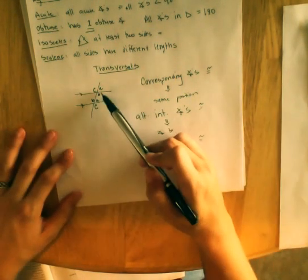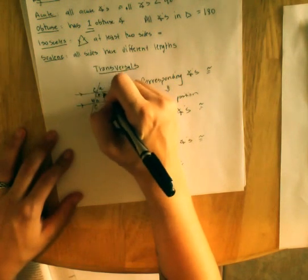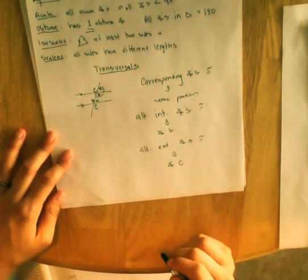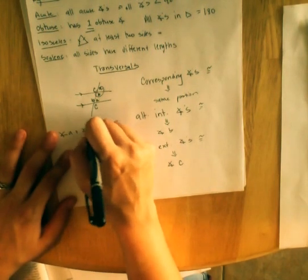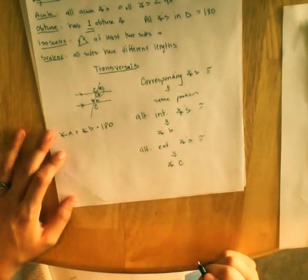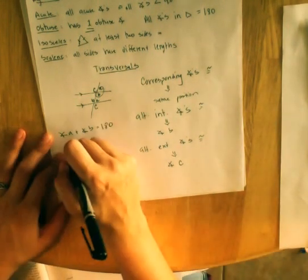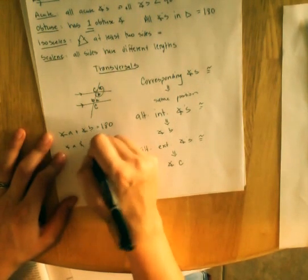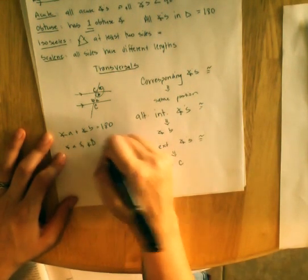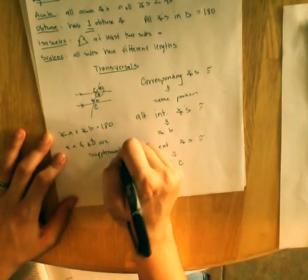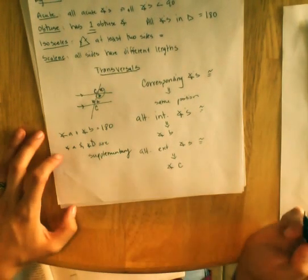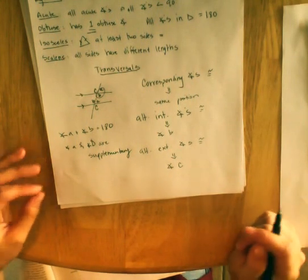We also have in here a straight angle created by angle A and angle B which we remember means angle A plus angle B equals 180, which also means that angle A and angle B are supplementary. It all ties together.